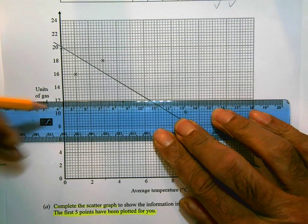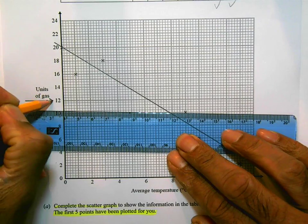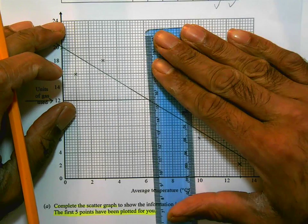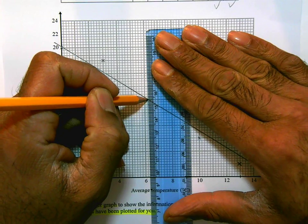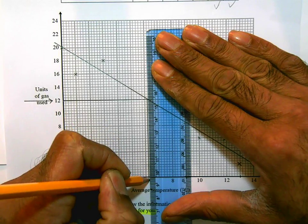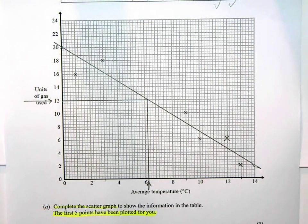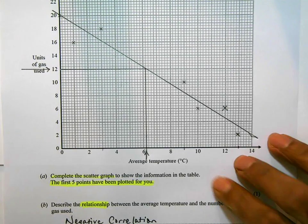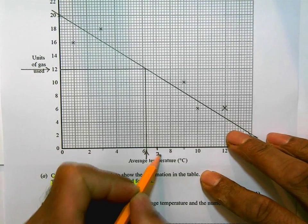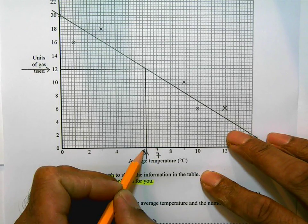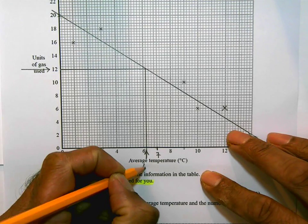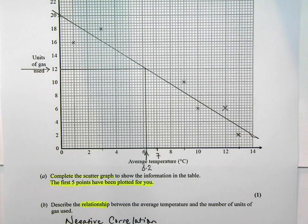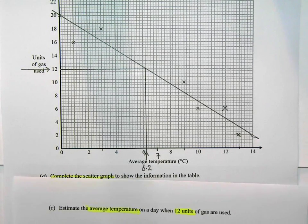They want us to work out the temperature when 12 units of gas are used. So 12 units of gas is here at that point. So I'm going to draw a line across from 12 units to the line of best fit. And then I'm going to come right down to the temperature and read off this value here. To take that reading, I know this value here is going to be 7. So there are 1, 2, 3, 4, 5 tiny squares between 6 and 7. Each of them is going to be worth .2. So that value that I've drawn my arrow is 6.2.